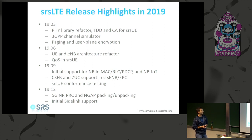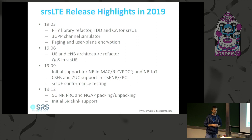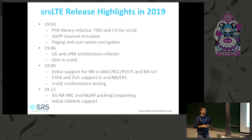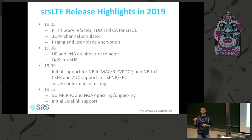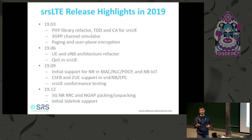In 19.09 we started to open source the first 5G NR blocks — extensions to data plane protocol layers. We started putting NB-IoT, which had previously been a closed source implementation, into open source. We added circuit switched fallback so you can have a 2G and 4G network and fall back to 2G for calls.